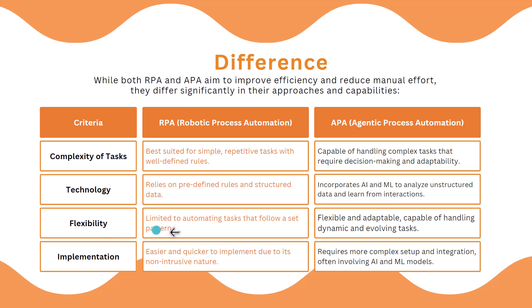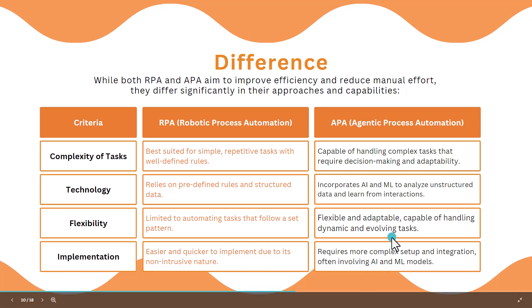When it comes to flexibility, RPA bots are limited to automating tasks that follow a set pattern, whereas APA bots are flexible and adaptable, capable of handling dynamic and evolving tasks. In terms of implementation, RPA is easier and quicker to implement due to its non-intrusive nature, however APA bots require more complex setup and integration, often involving AI and ML models.